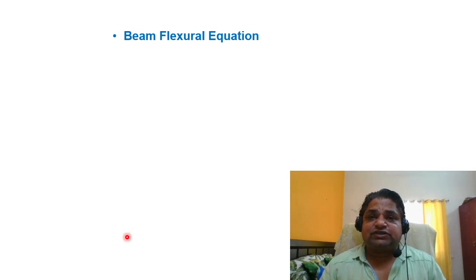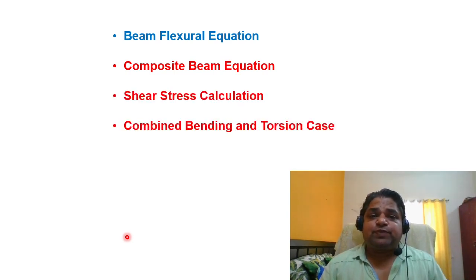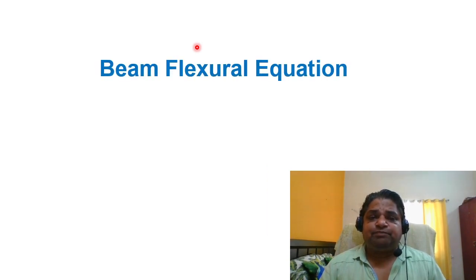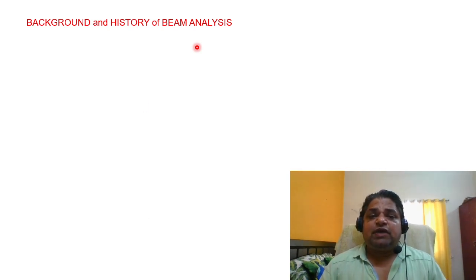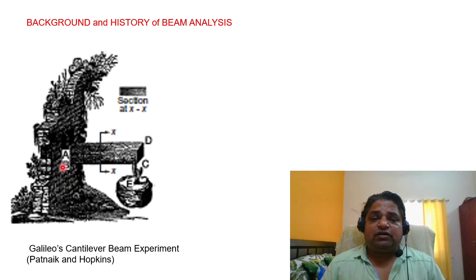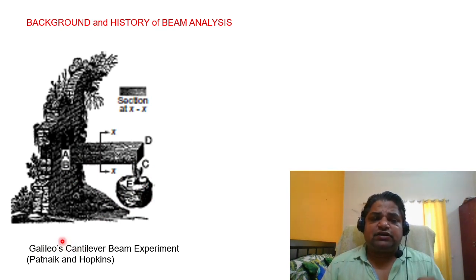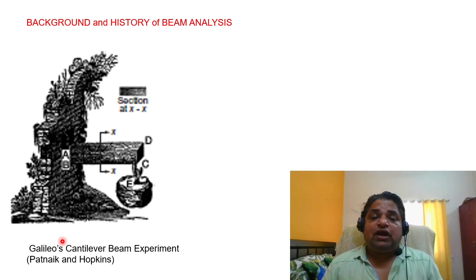Our first aim is to find out the beam flexural equation. The blue-colored text shown here refers to what will be discussed in later parts. For the beam flexural equation, we look at the background of beam analysis. Earlier I told you a cantilever experiment — a wooden block with a dead load at the end — was done by Galileo Galilei about 200 to 300 years ago.